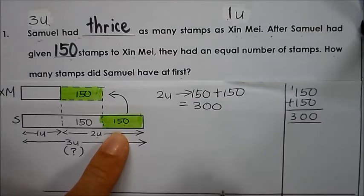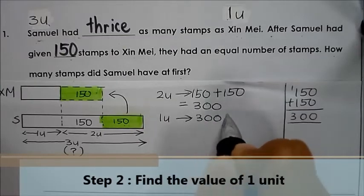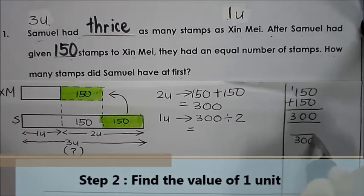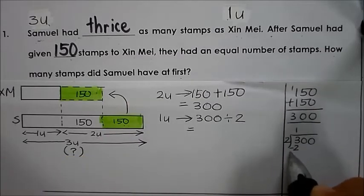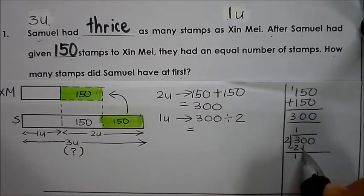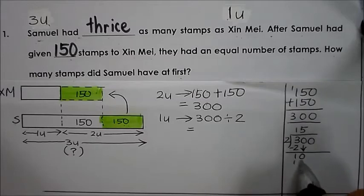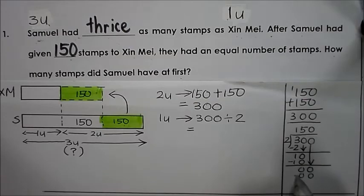So two units is equal to 300. Now we want to find one unit, which is 300 divided by 2. Let's do the working: 300 divided by 2 — 1 times 2 is 2, 3 minus 2 is 1, bring down the 0 gives 10, 5 times 2 is 10, 10 minus 10 is 0, bring down the last 0, 0 times 2 is 0 — so the answer is 150.